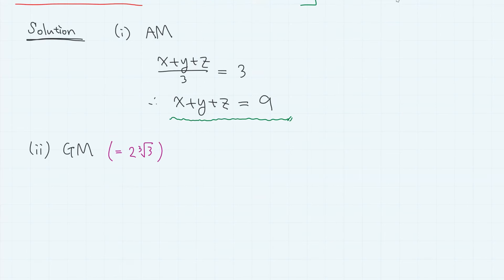Then, the geometric mean is given as 2 times cube root of 3. So, cube root of xyz equals 2 times cube root of 3. If we cube both sides, we obtain xyz equals 8 times 3, so xyz equals 24.